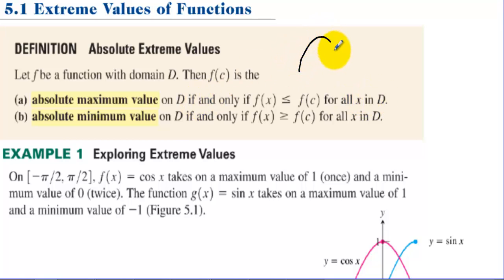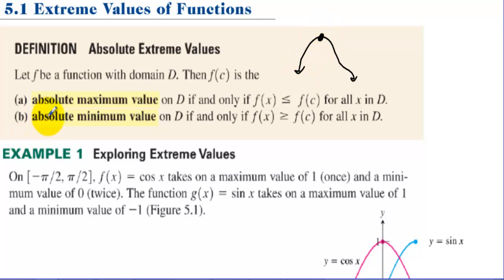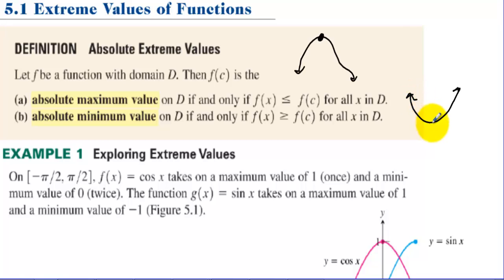We have an absolute maximum if none of the function is above that point — so this would be a maximum value up here. We have an absolute minimum if no other point is below this point, so this must be an absolute minimum.